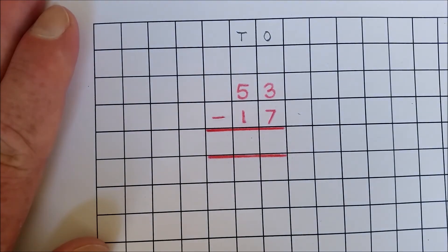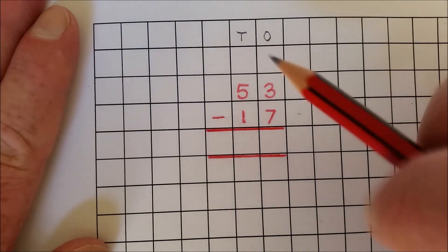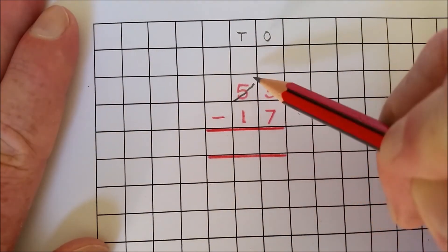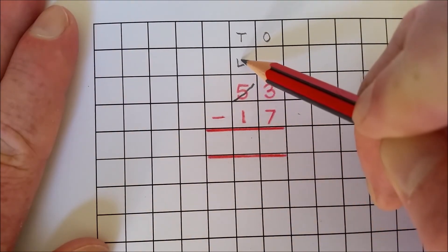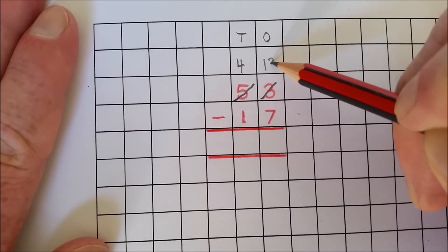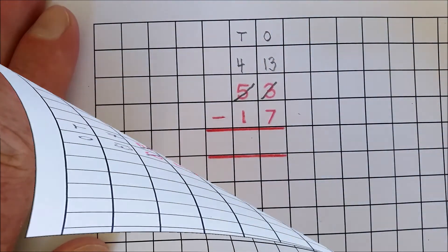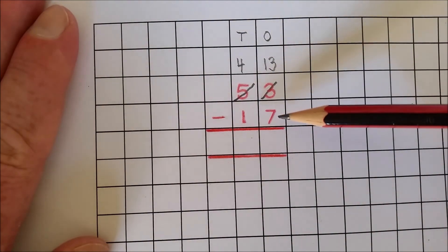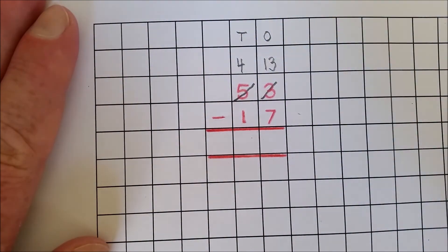Rename five tens and three ones as four tens and thirteen ones. Thirteen ones take away seven ones is six ones.